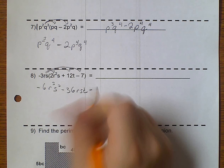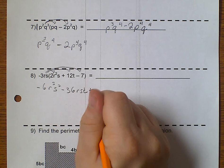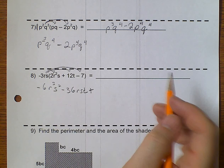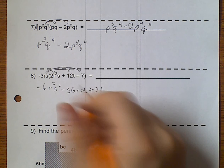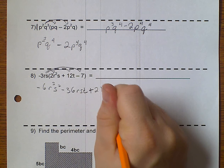Minus negative 3. This is actually plus. Because negative times a negative make it positive. And, 3 times 7 make 21. r, s.